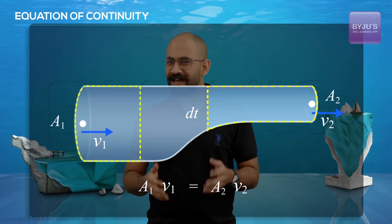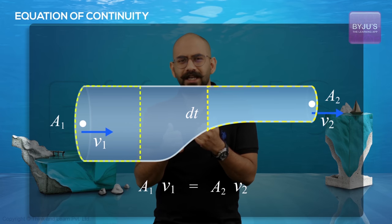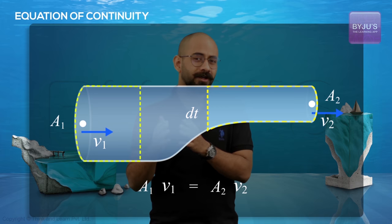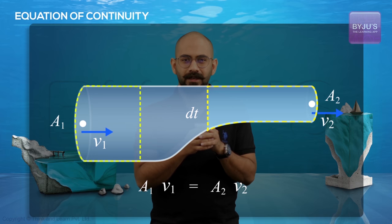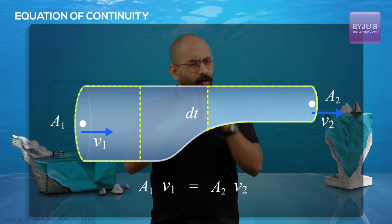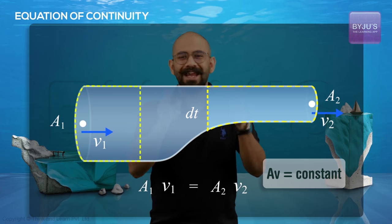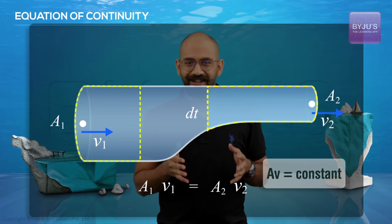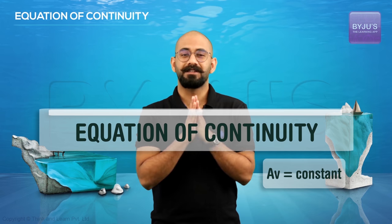Now because I took two random points, this proves that if an incompressible fluid is undergoing steady flow, then the product of the area of cross section and the speed will be the same for any two random points. And this is called the equation of continuity.